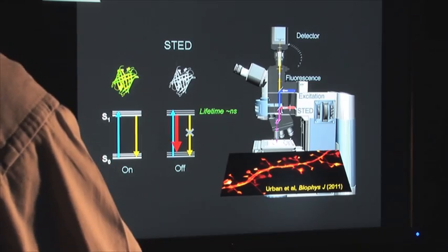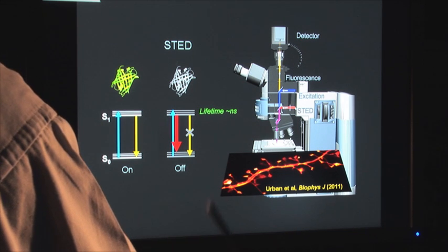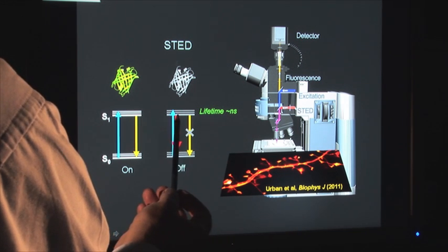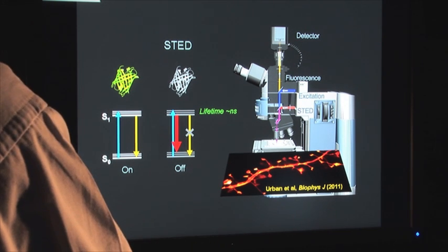How does RESOLFT relate to STED? The disadvantage of the STED microscope is that it requires relatively large intensities, because this off-switching of fluorescence has to happen within a very short period of time, maybe the lifetime of the dye, which is just a nanosecond.